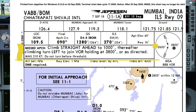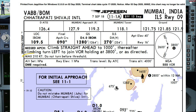In case of a missed approach, the procedure is to climb straight to 2000 feet, thereafter climbing left turn to join the VOR holding at 3800 feet or as directed by ATC. Maximum speed during the hold will be 210 knots.